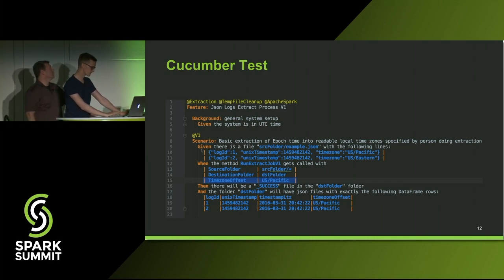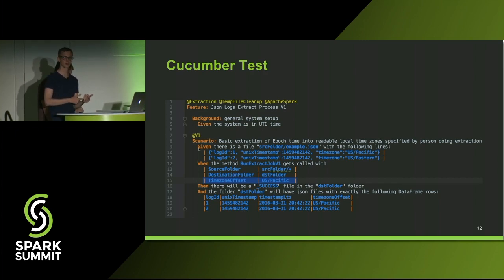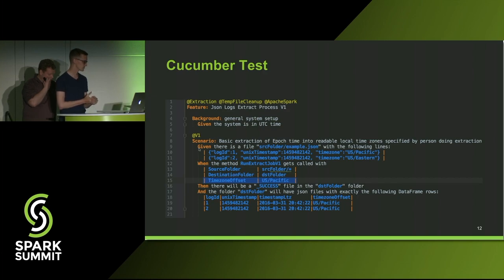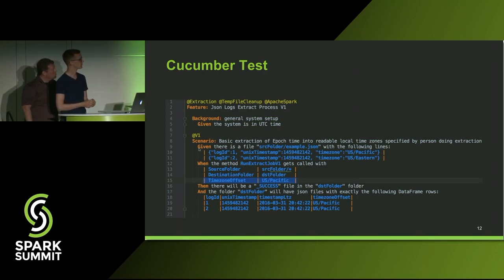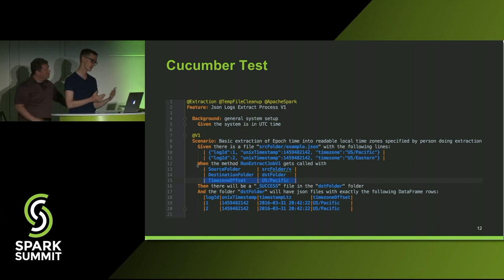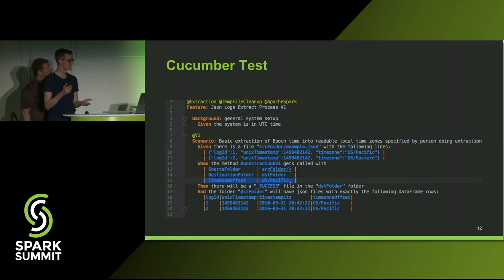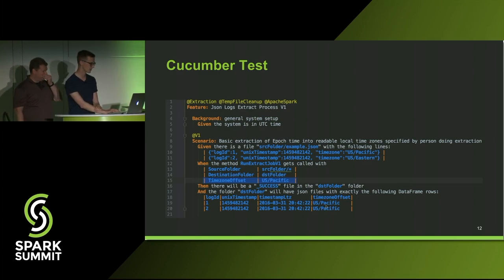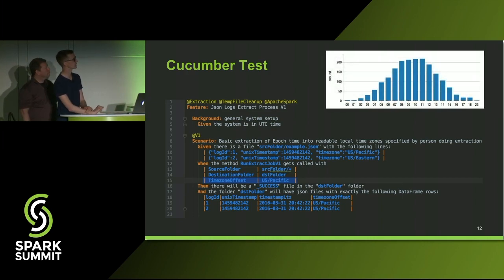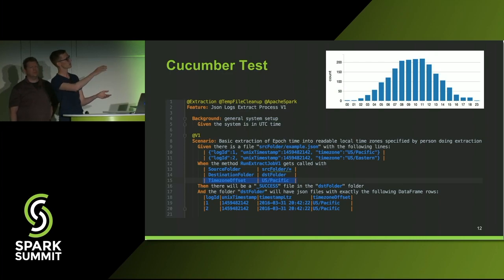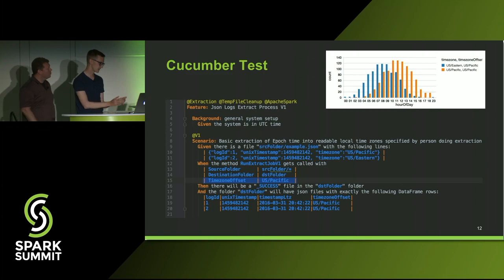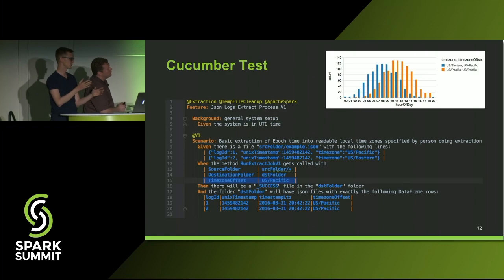We named the scenario 'Basic Extraction of Unix Time into Readable Local Time Zones Specified by the Person Doing the Extraction.' In unit testing you have Arrange, Act, Assert. The first given statement is where you arrange all the preconditions and data — in this case a file with two lines, each with three different properties in JSON format. The when statement is your action — we have our source, destination folder, and the time zone offset specified by the user. Finally, we assert we have a success file and the output is in the US-specific time specified on the input. In the Databricks Notebook environment, a quick query shows a distribution with two different peaks — US Eastern and US Pacific.